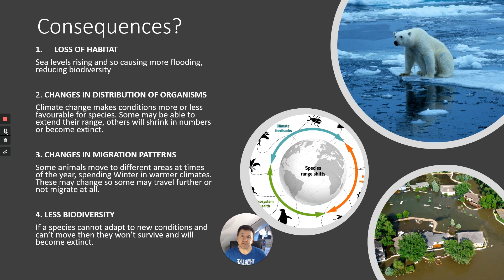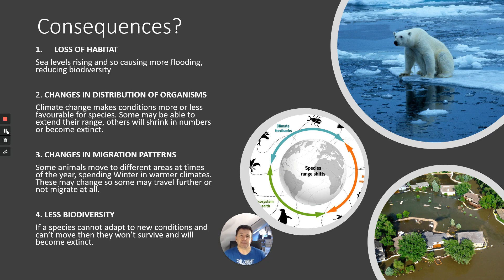The fourth and probably biggest issue is reduced biodiversity. Many species take thousands of years to adapt to a new environment, but we're talking about rapid climate change — a rapid increase in mean temperatures in a short space of time. If species can't adapt to these new conditions and can't move to a more favorable area, they will not survive, become extinct, and biodiversity will be reduced.